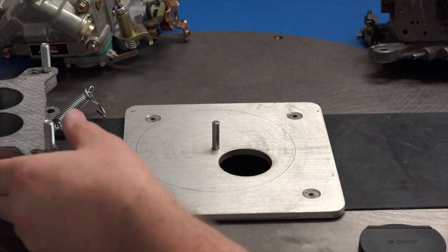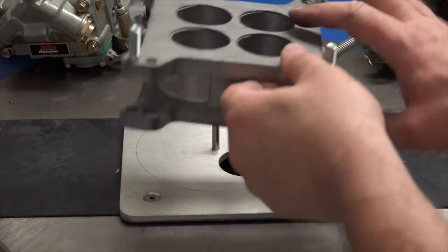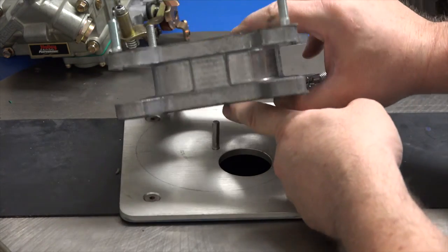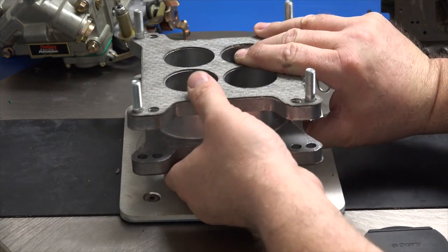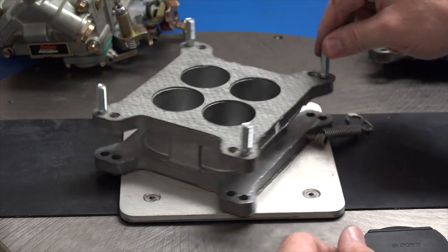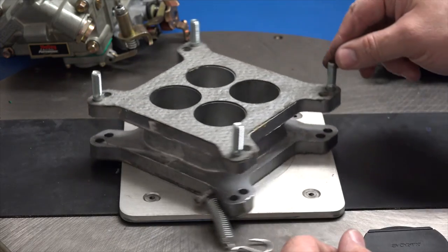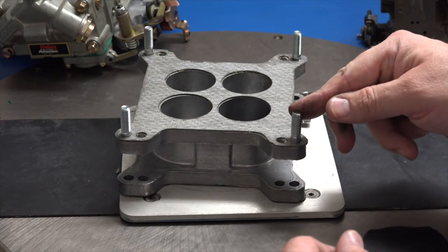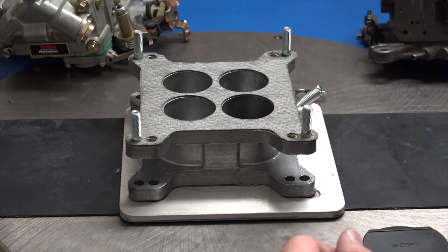All right, here you can see the carburetor flow plate is mounted to the flow bench. That stud is going to stick into this little hole in the carburetor adapter. Once we get that in place, you can see that we simply rotate the entire carburetor, and we flow one bore or one venturi, one hole at a time, and we add those numbers together.